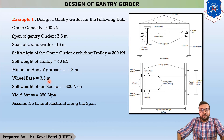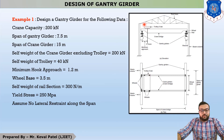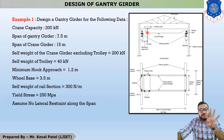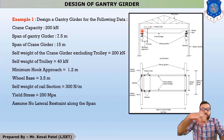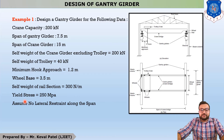Wheel base is 3.5 meters. Wheel base, viewed from the top, is the distance between the two wheels on one side — there are four wheels total, two on each side. The distance between these two wheels is the wheel base, given as 3.5 meters. Self-weight of rail section is 300 N per meter. Yield stress Fy = 250 MPa. Last assumption: no lateral restraint along the span. This is all the given data for this example.